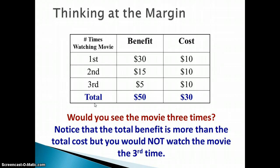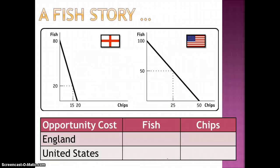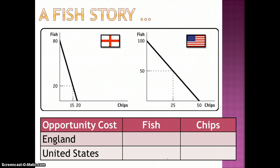The last concept is comparative versus absolute advantage. When someone has an absolute advantage, it means they can make more of something than somebody else. When we talk about comparative advantage, we say that the opportunity cost is lower for one person to produce a good than for another person.